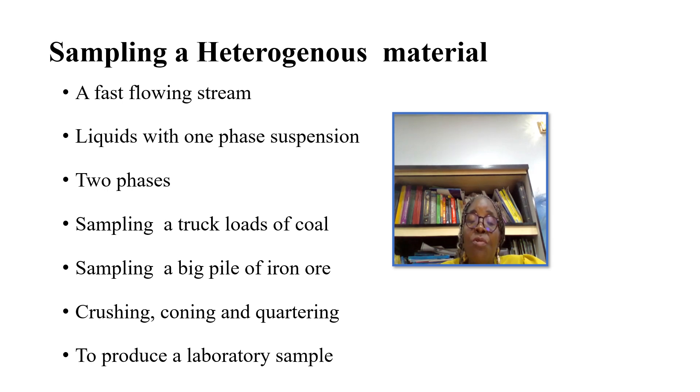How do you sample a truckload of coal? You select a large number of portions in a systematic manner from different parts of the bulk and combine and form a laboratory sample. What about sampling a big pile of iron ore? You crush, you cone, you quarter. Iron ore is strong, so you crush, you will cone it, you will quarter them to get a representative sample. To produce a laboratory sample, the final quartered site is ground to powder and sieved to get the final sample for analysis.